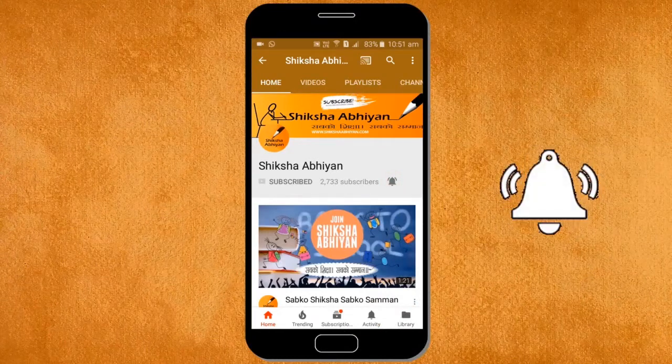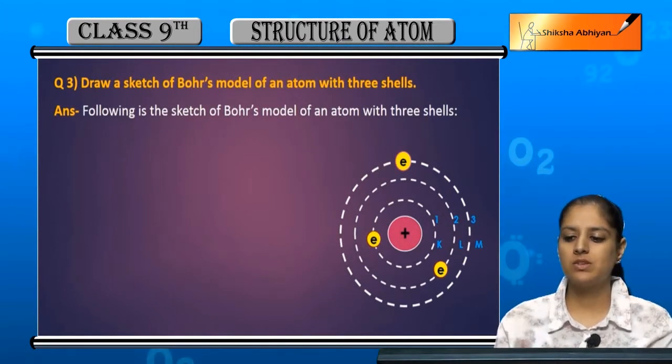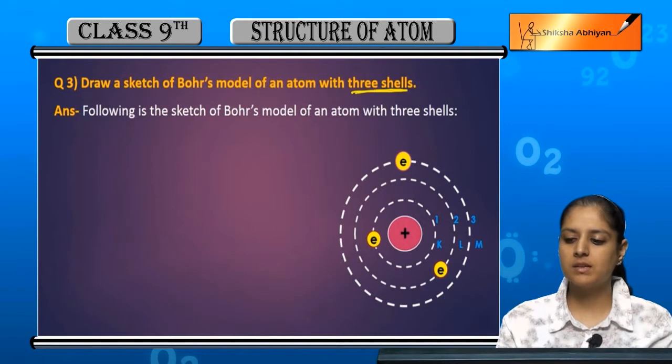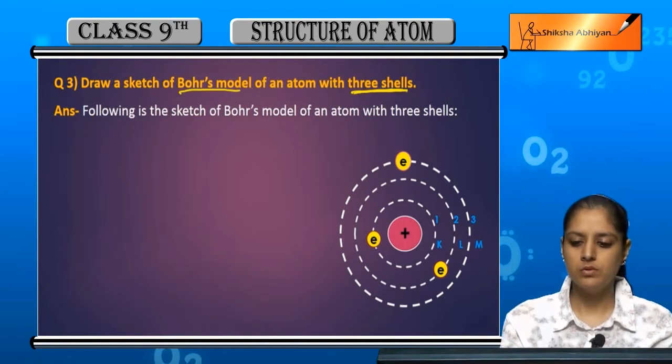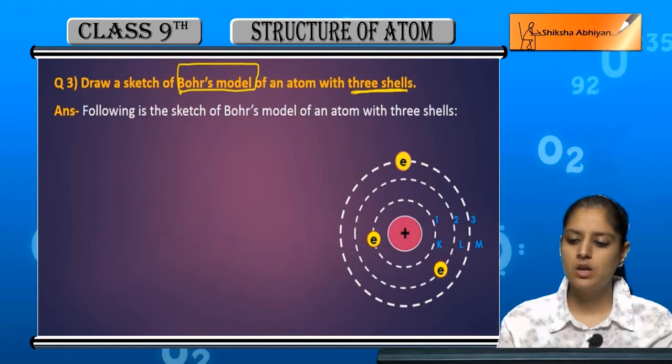Now question number three: draw a sketch of Bohr's model of an atom with three shells. Agar kisi atom ki three shells hai to uska mein Bohr's model of an atom ka sketch banaye, okay. So according to...